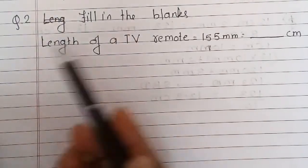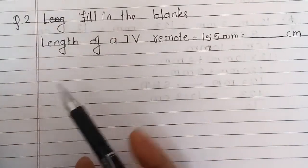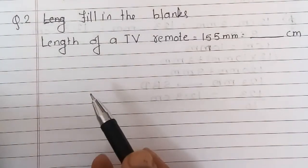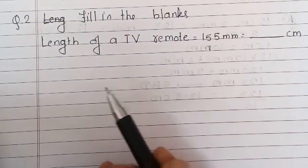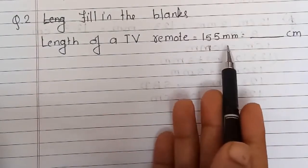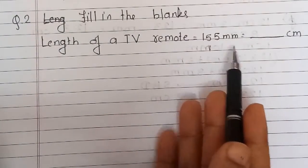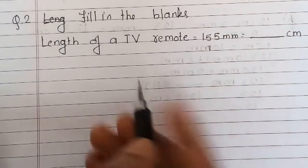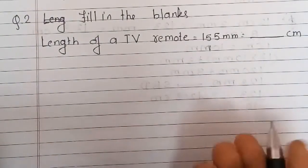See the solution of this fill in the blanks. The length of a TV remote is given as 155 millimeters. You have to convert that length into centimeters.